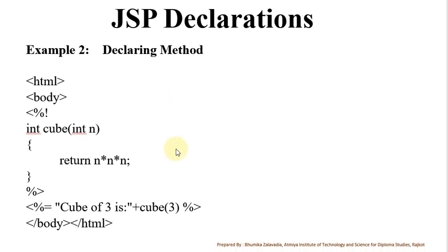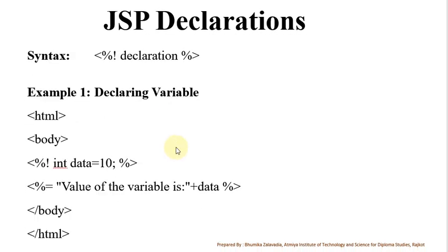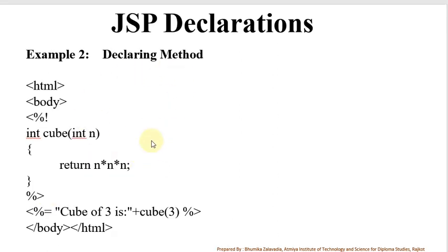The variable declaration can be done with the scriptlet tag also. For example, if you do not write the exclamation sign, meaning you are not using the declaration tag, it is okay. You can also write scriptlet tag integer data equals 10. But for defining a method, it is compulsory to use the declaration tag.